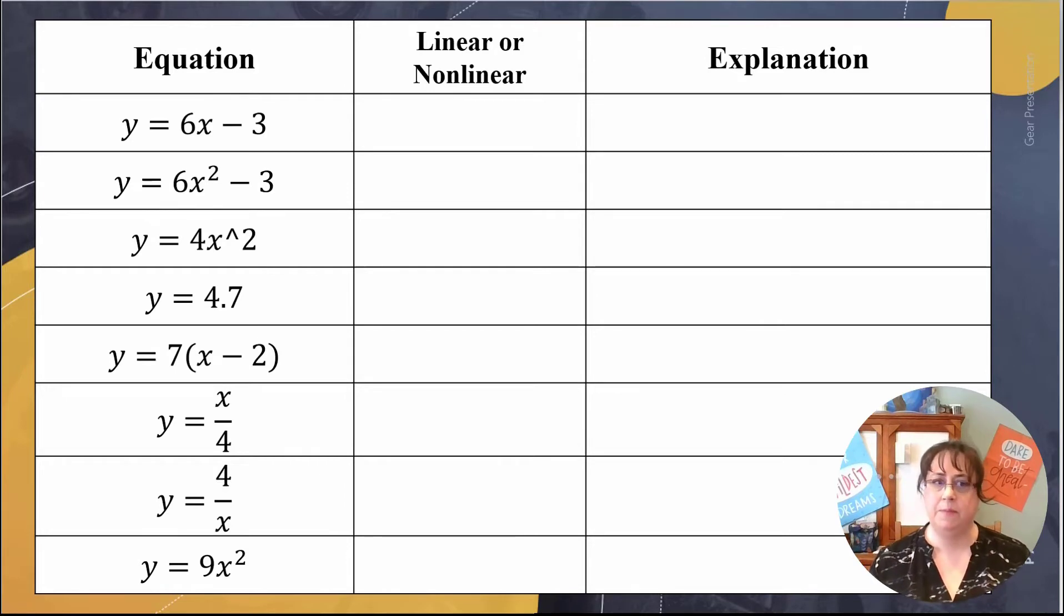So here we have some examples of equations that we're going to look at. We're going to classify them as either linear or nonlinear and give an explanation. It's usually easier to look at our explanation and then go to either linear or nonlinear. So our very first one is a very classic linear equation: y = 6x - 3. It follows the y = mx + b form, and there we have a linear equation.